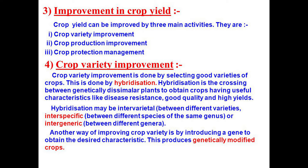Different crops require different climatic conditions, temperature and photoperiod for growth and completion of their life cycle. In India there are two types of seasons: one is the Kharif season and another is the Rabi season. Crops grown in the rainy season are known as Kharif crops, and crops grown in the winter season are known as Rabi crops. Kharif season ranges from June to October, and Rabi season from November to April. Paddy, soya bean, pigeon pea, maize and cotton are included in Kharif crops, while wheat, gram, peas, mustard and linseed are Rabi crops.